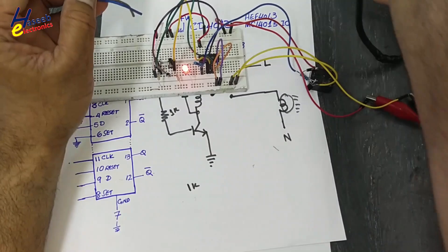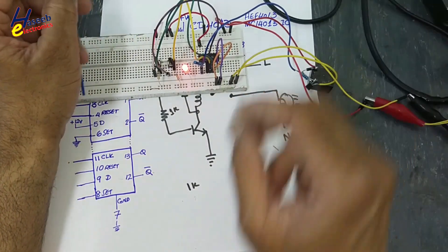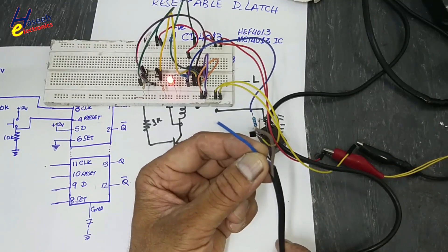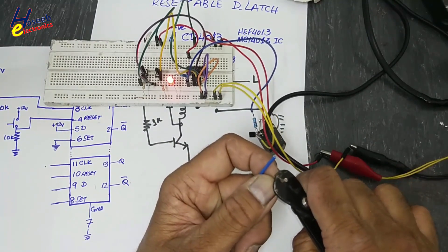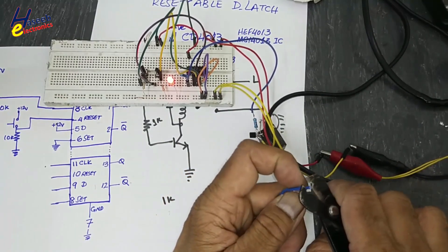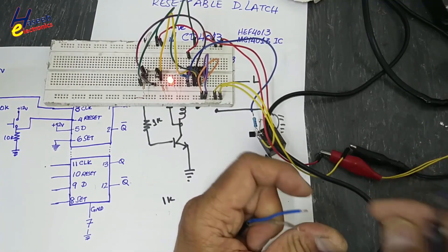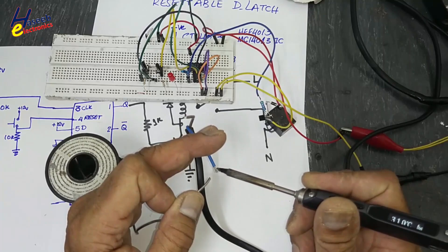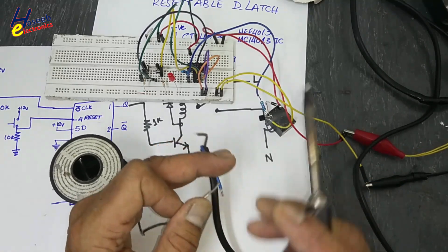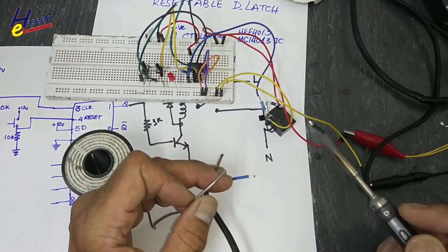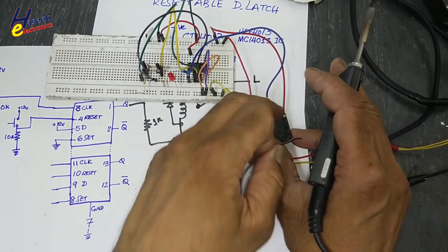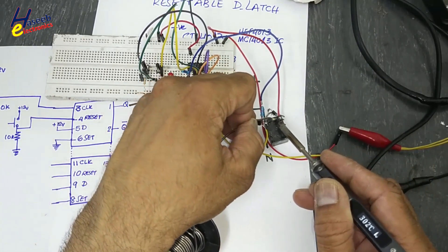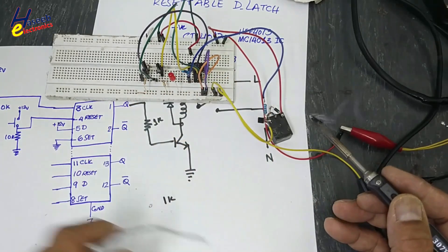We are operating this switch manually. If we have any computer control signal or any microcontroller or any logic circuit, at that time we will use that signal to turn on and turn off this relay. Now we have these open ends of this wire. We will connect to common points and normally open points.